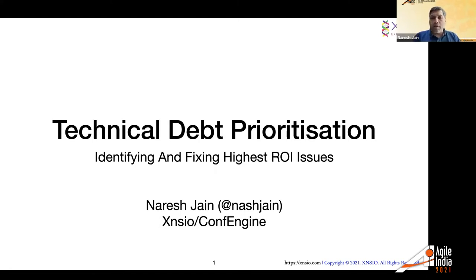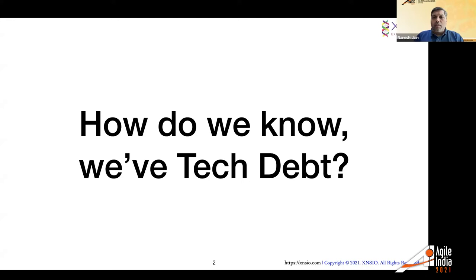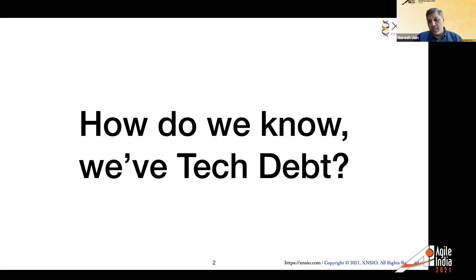All of this work is very much based on my experience coaching teams, helping teams, and also building my own product. For example, the platform we are currently using, ConfEngine — we used the same approach for that. So the first question that often comes to mind is: how do we know we have tech debt? Please use your chat and put in your thoughts. What indicators tell you that you have tech debt on your team?